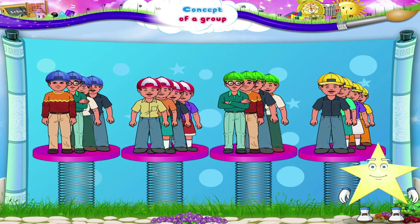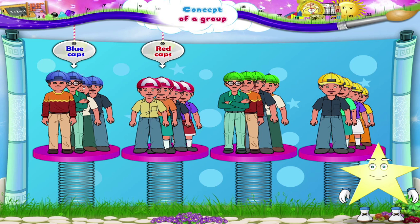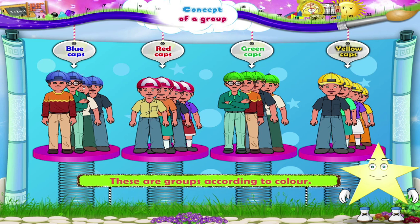Look at these groups of children. They are wearing blue caps, red caps, green caps, and yellow caps — all of them are standing in separate lines. So these are groups according to color.